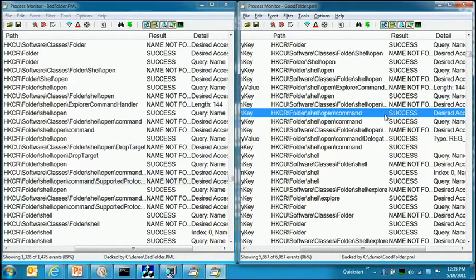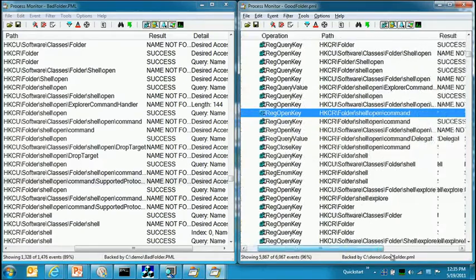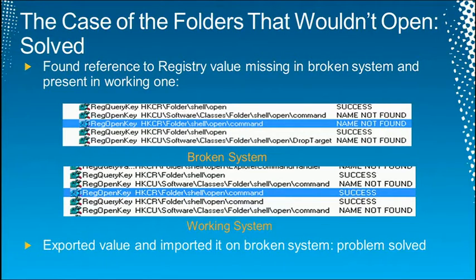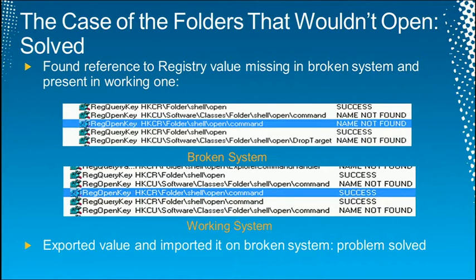He used Jump to Registry in Process Monitor, exported that branch from the working system, imported it into the broken system, and the problem was solved. Something was wrong with the shell open command handler — what happens when you double-click something on the desktop — and it was fixed in just a few minutes of side-by-side comparison.